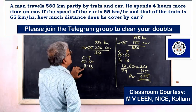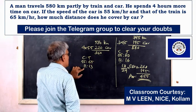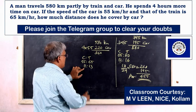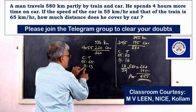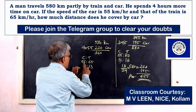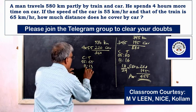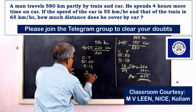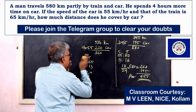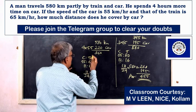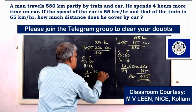How much distance does he cover by car? Total distance ratio 11 to 13. Out of 24 total parts, 360 km total. 11 by 24 into 360.